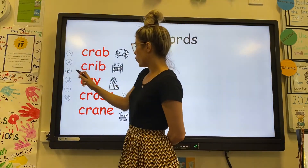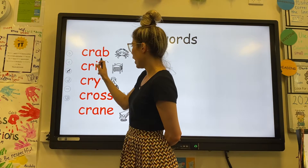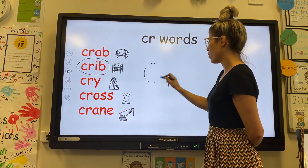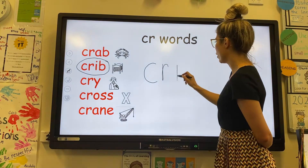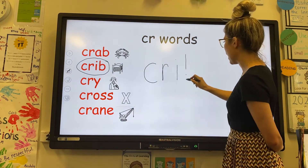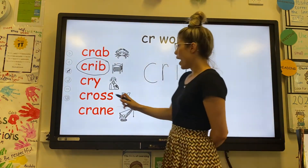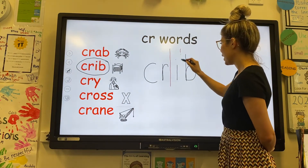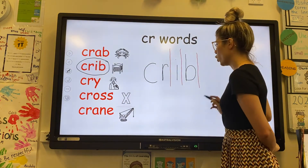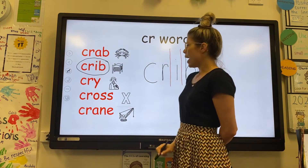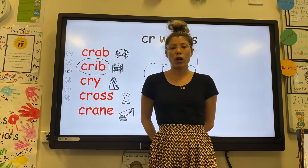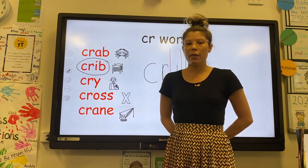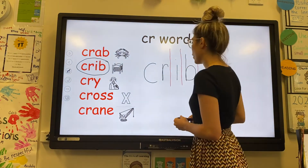Our next word is crib. The letters in the word crib are C, R, I, B. And the sounds that we can hear in crib are CR, I, B. Crib. A crib is another word for a cot and that's what babies usually sleep in. The baby was sleeping in the crib.